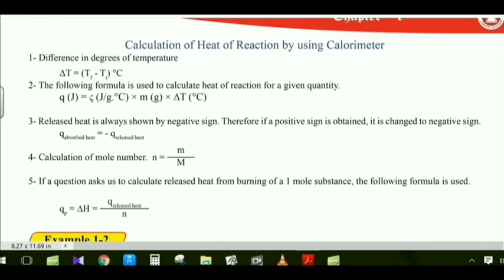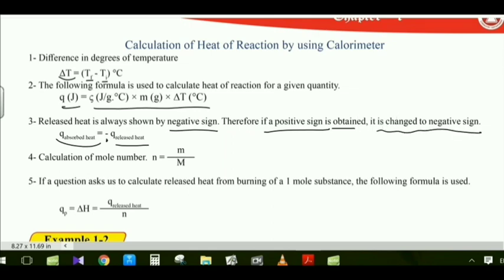There are some formulas to calculate heat in a calorimeter. Delta T equals T-final minus T-initial. The formula Q = specific heat × mass × delta T is used to calculate heat. Also, Q-absorbed equals minus Q-released; released heat is always shown by a negative sign. Therefore, if a positive sign is obtained, it must be changed to a negative sign.